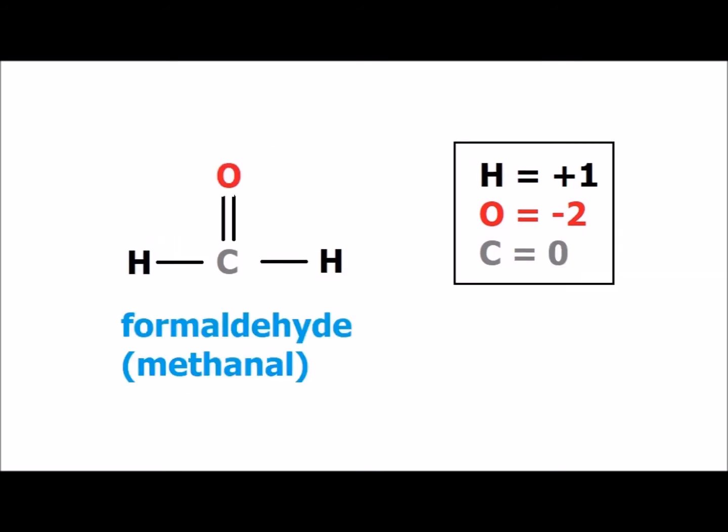Oxidation of a primary alcohol leads, at first, to an aldehyde. The simplest aldehyde is commonly called formaldehyde, with the IUPAC name of methanal. Since oxygen has an oxidation number of minus 2 and hydrogen plus 1, in this compound carbon has an oxidation number of zero, which is also the number carbon would have in elemental carbon.